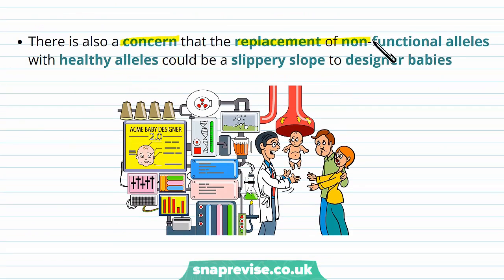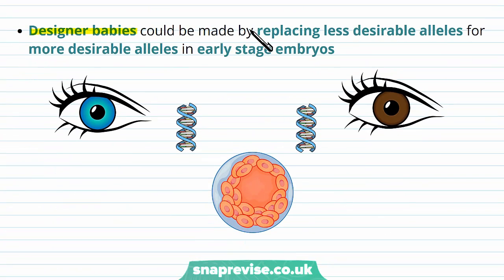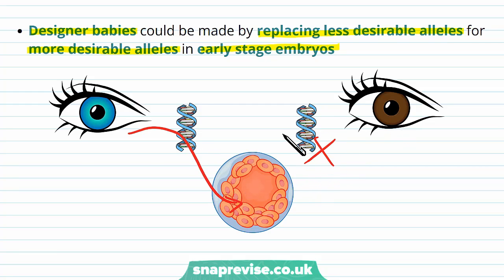There's also a concern that the replacement of non-functional alleles with healthy alleles could be a slippery slope towards designer babies. It's important to make sure that natural selection still happens and that babies are born naturally. If we start altering different alleles, this may impact the population in the future. Designer babies could be made by replacing less desirable alleles with more desirable ones in early-stage embryos even if it's not crucial to their survival — for example, introducing blue eye alleles and deleting brown eye alleles — which could have unforeseen consequences.